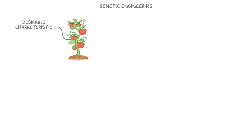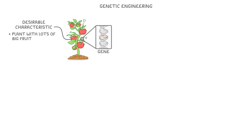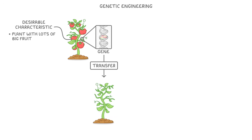Genetic engineering is one of those topics that can seem quite complicated at first, but it's really quite simple. The basic idea is that we find one organism that has a desirable characteristic, like a plant that has lots of big fruit, then we take the gene that's responsible for that trait and transfer it to another organism, so that this other organism develops the same trait.